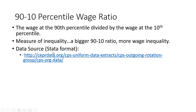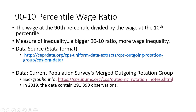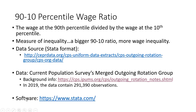The data source, which will be in STATA format, with links in the description, is the current population survey merged outgoing rotation group. Here are links to some background information. I'm going to use 2019 data, which contains almost 300,000 observations. The software I'm going to use is STATA, and you can find information about STATA at the provided link.